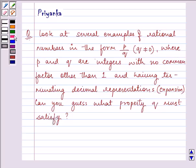So let us start with our solution. First of all we need to have examples of rational numbers in the form p by q where p and q are integers having no common factor other than 1.